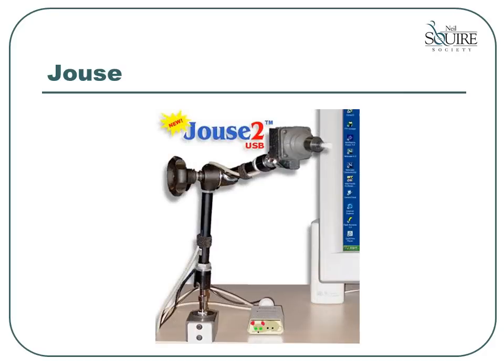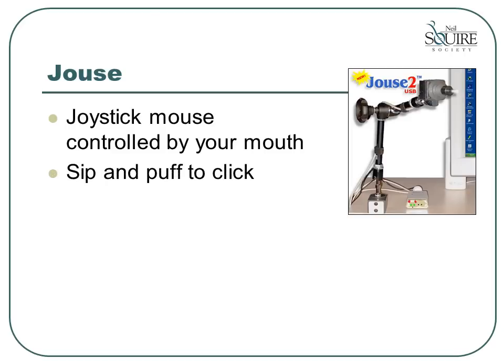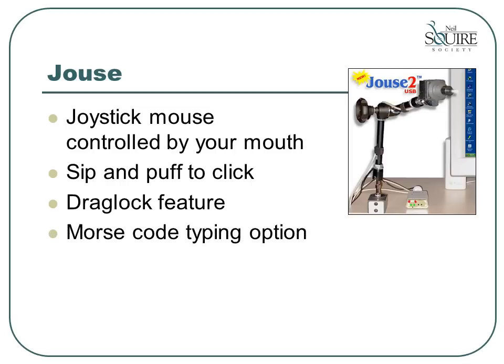Another hands-free pointer is the Jouse. This device was originally developed by the Neil Squire Society in the early 1990s and is now being marketed by a Canadian company in Newfoundland. The Jouse is a joystick mouse that is controlled by your mouth. It has a long arm attached to a desk and a joystick with a small straw coming out of the center. After moving the joystick with either your teeth or your chin, you then sip or puff on the straw to perform a left or right click. It also has a drag lock feature so you will not run out of breath when trying to highlight or move an object. Built into the unit is a Morse code typing option — you can sip and puff the dots and dashes of Morse code to type on the screen. Basically, this unit provides full and independent access to both mouse and keyboard functions for someone who may be a high-level quadriplegic.